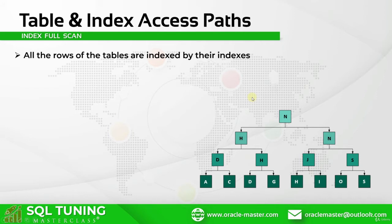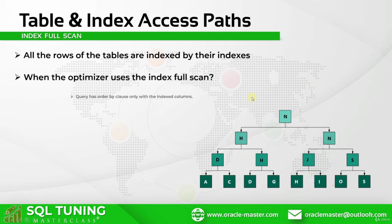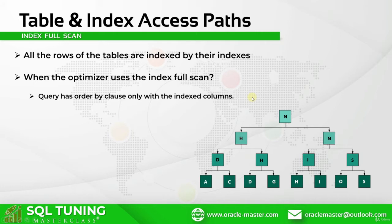Sometimes, reading the whole index and then reading the whole table with the related row IDs will be faster than reading directly from the table. So how can that happen? If our query has an ORDER BY with the indexed columns, even if we read all the data of a table, reading by using the index will be faster than reading directly from the table, because the sort operation is a really costly operation, and if we eliminate that, our query will return the result faster.